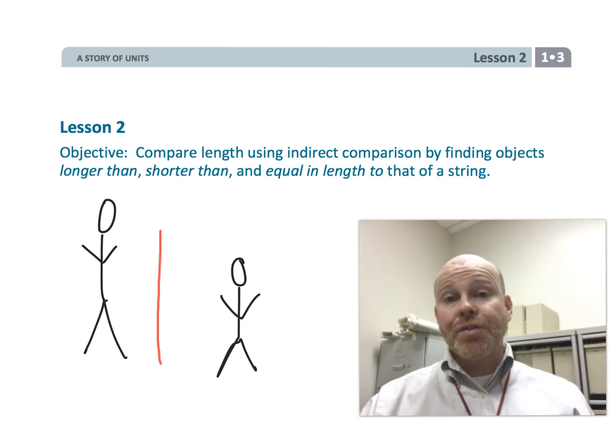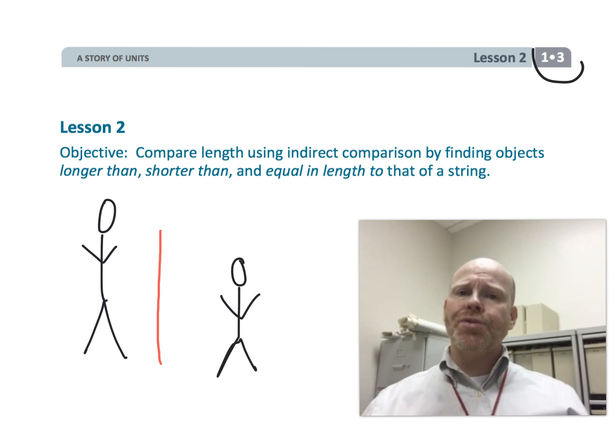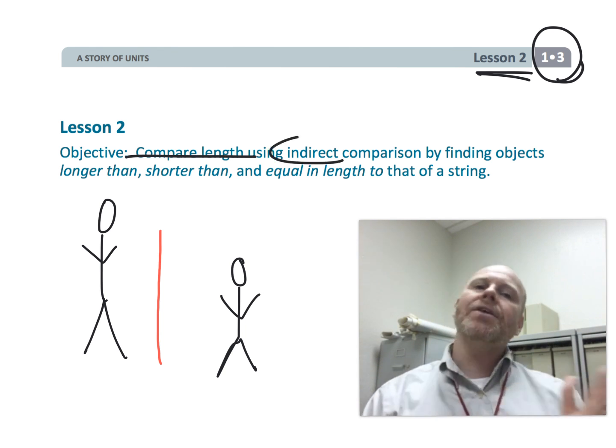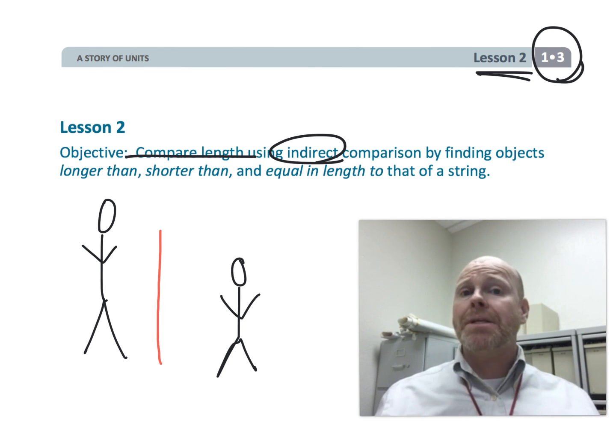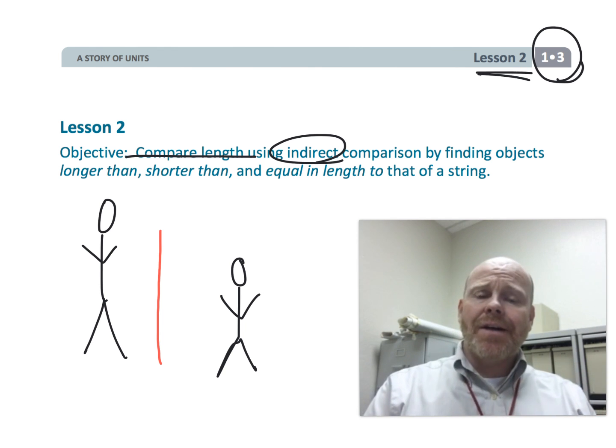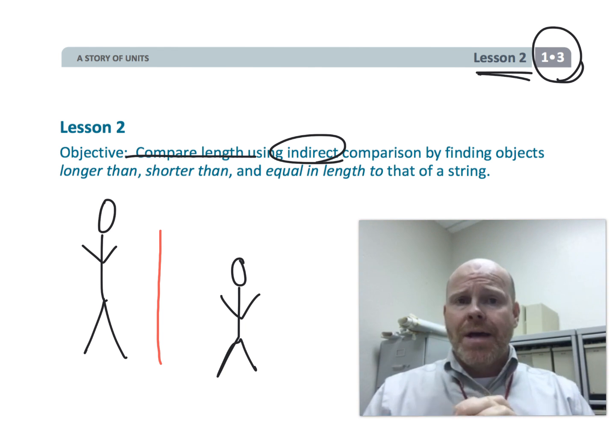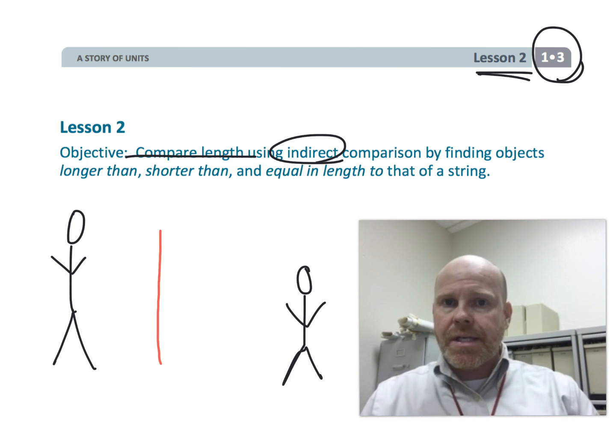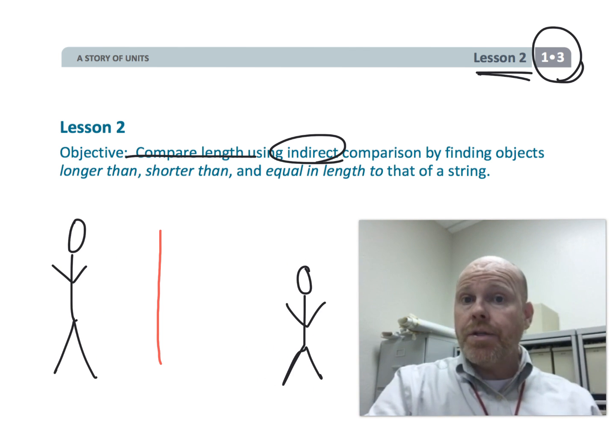This is first grade module 3 lesson 2. In this lesson, students are going to be comparing lengths of different objects indirectly by using a middleman, a piece of string. They're going to identify, for example, here we got a couple of people and that red string you'll notice is longer than the short person but it is shorter than the longer person.